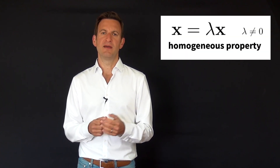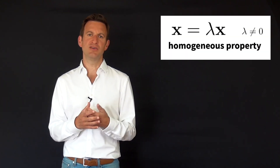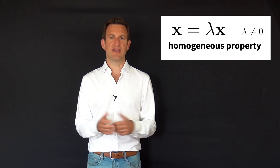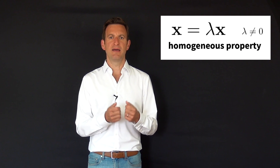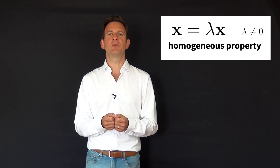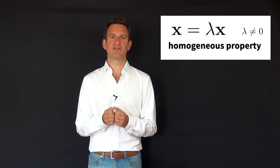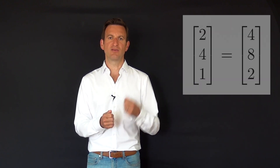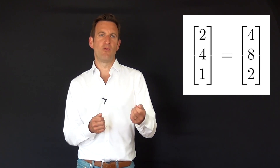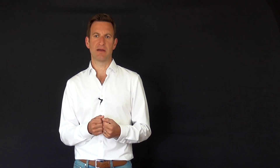Points in homogeneous coordinates have a special property called the homogeneous property: every object in homogeneous coordinates is only defined up to a scalar. So we can multiply any object in homogeneous coordinates by a non-zero number and it still represents the same object. For example, the vector (2, 4, 1) is identical to the vector (4, 8, 2).